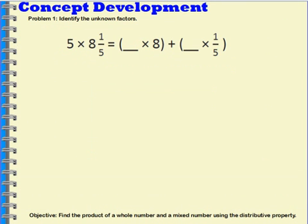So in this example, we're going to identify the unknown factors. If five times eight and one-fifth is equal to this side, then what would I be multiplying the eight by and what would I be multiplying the one-fifth by?